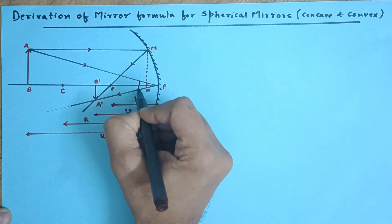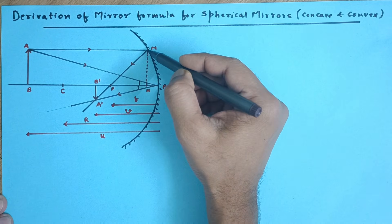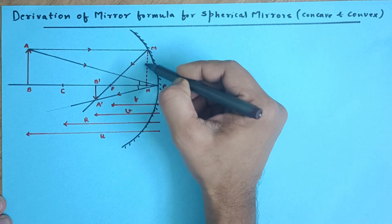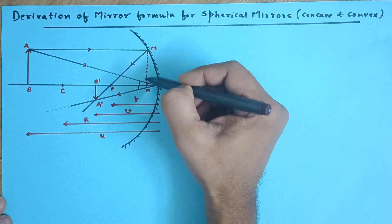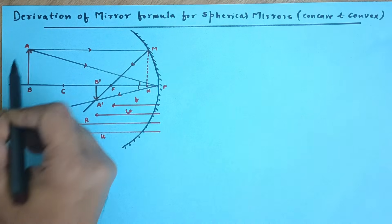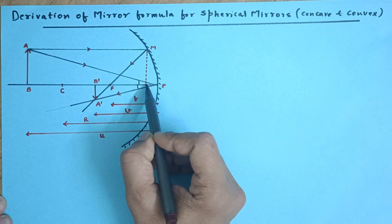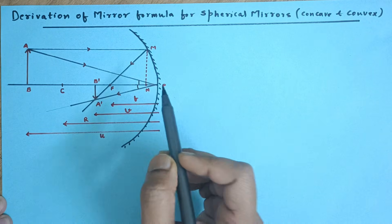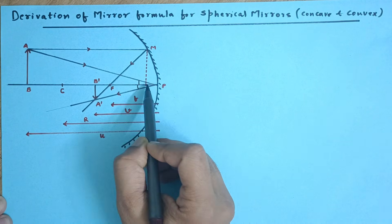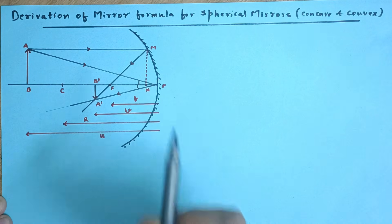These two angles are equal. Now, we have made a small construction by dropping a perpendicular line from point M — that is on the mirror, the point of incidence — to the principal axis. I have called this perpendicular distance MN, which is actually equal to the height of the object AB. This point N is very, very close to the pole of the mirror, so while measuring distances like PF (the focal length), I can also treat PF and NF as one and the same, because this distance is negligible.